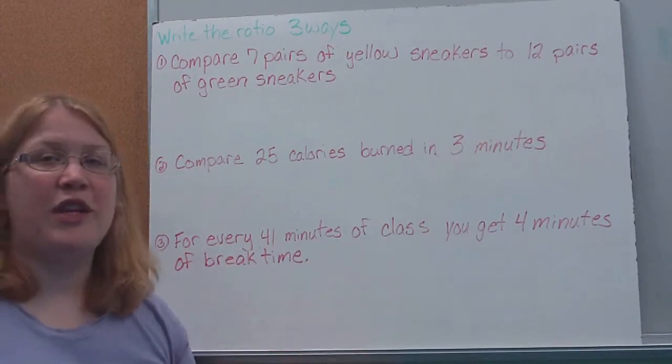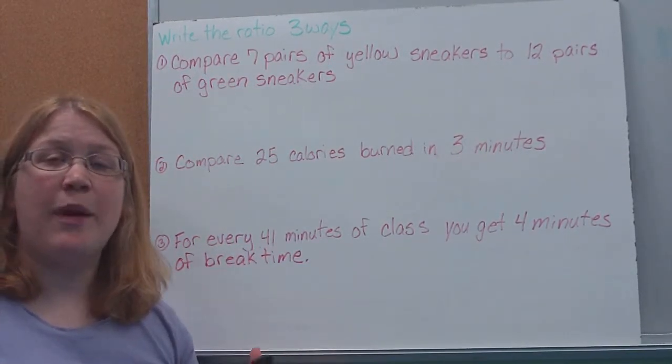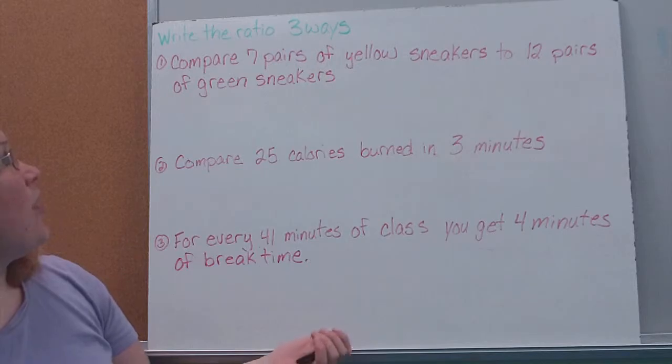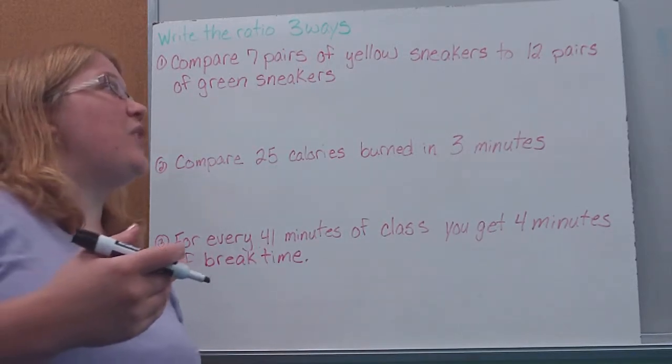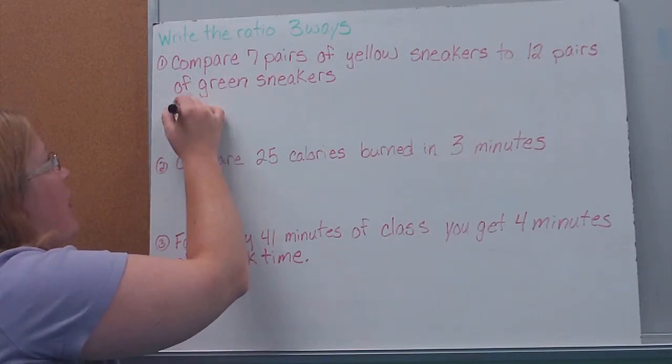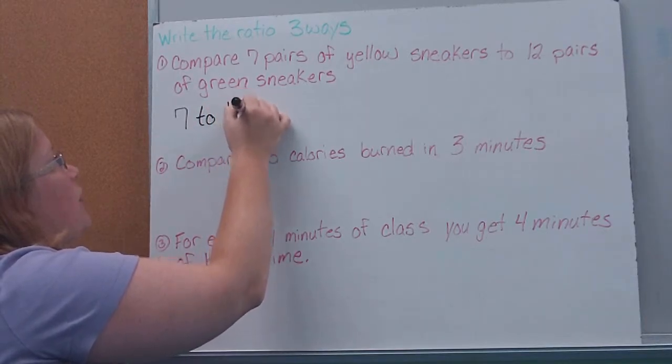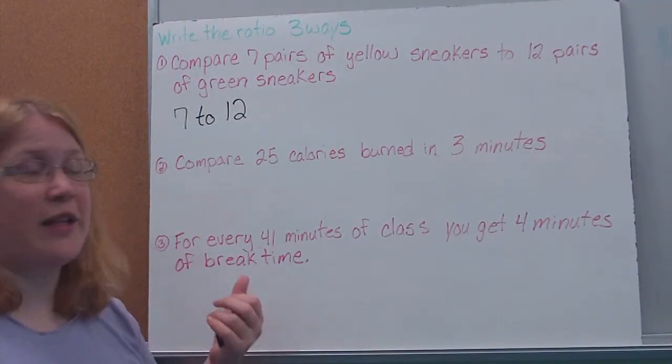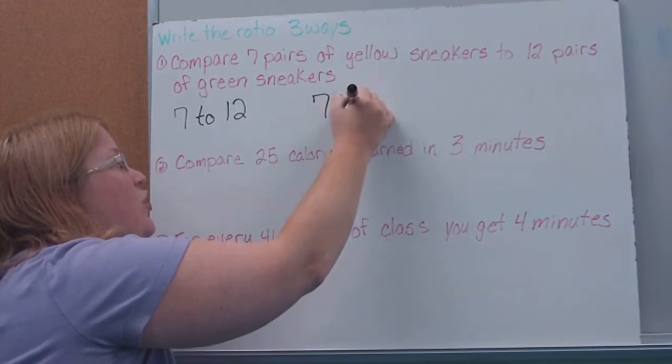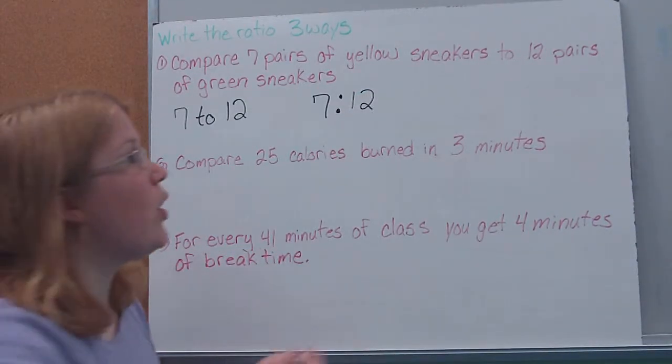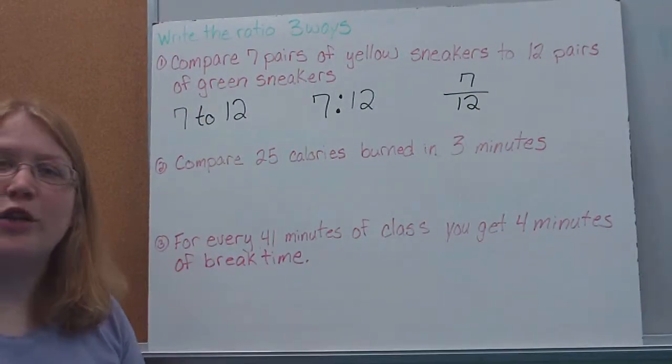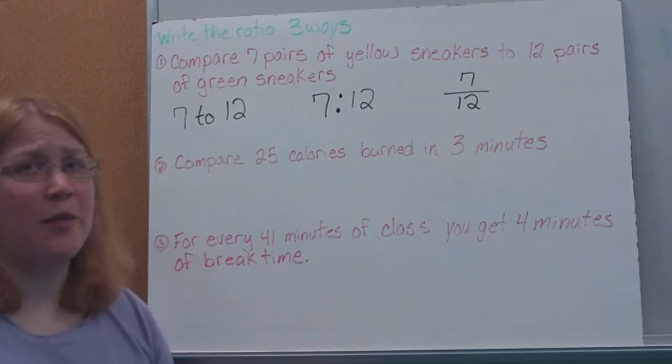We're going to start out just by expressing our ratios. I want to write these ratios in my three different ways: word form, ratio form, and fraction form. Number one tells me I'm comparing seven pairs of yellow sneakers to 12 pairs of green sneakers. What I'm saying is I'm comparing 7 to 12. All we're doing is writing our ratio. That's one way I can write it, word form. I can also write it in ratio form, 7 to 12, using the colon. Or we can write it in fractional form, 7 to 12, 7 over 12. 7 is the numerator, 12 is the denominator.